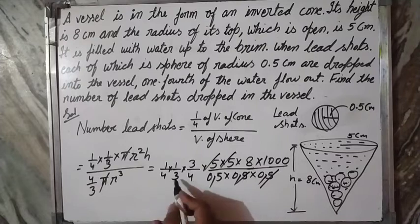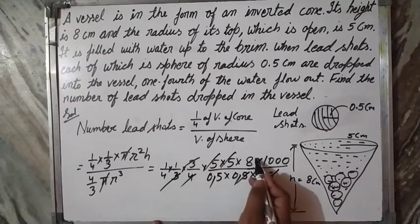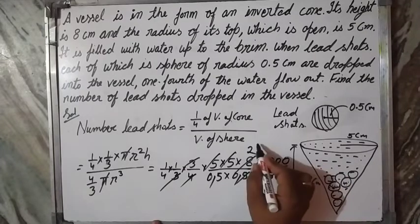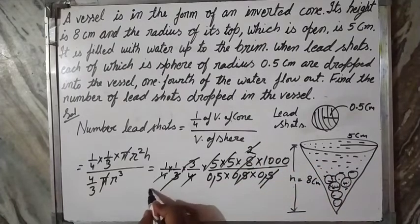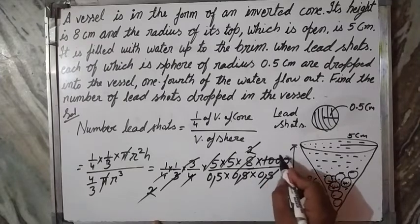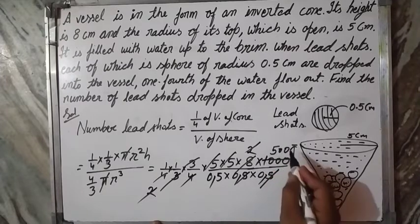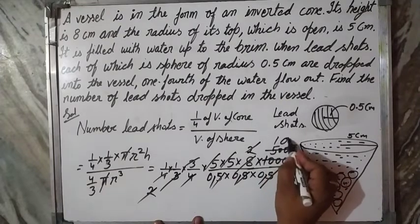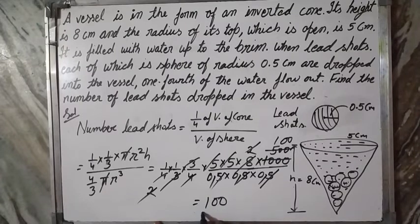Now 3 cancels, this cancels, you get 2. 2 cancels, you get 2. This cancels, you get 500. This 5 cancels, you get 100. So you have total number of shots: 100.